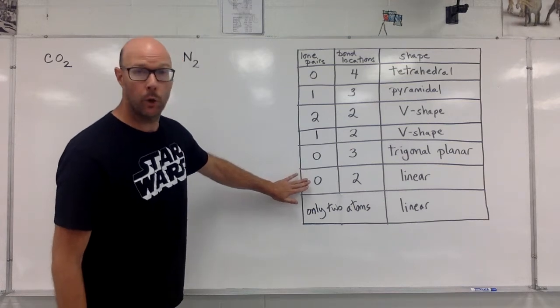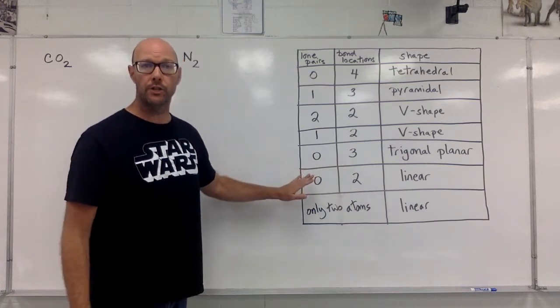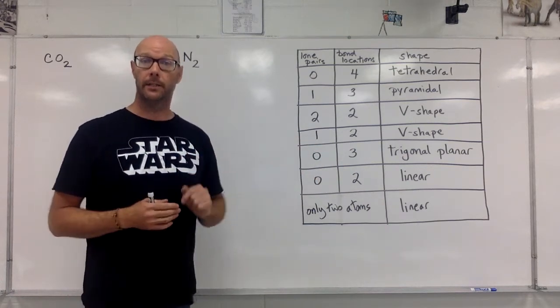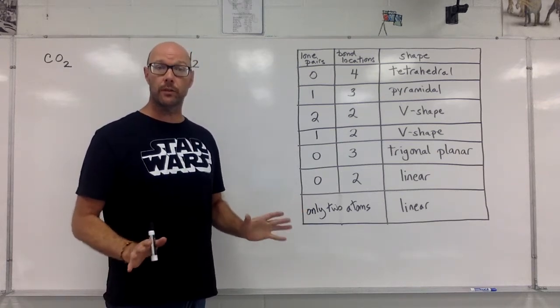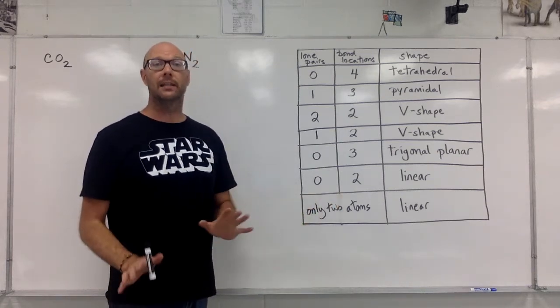If there's zero lone pairs and two bond locations, it's going to be all in a line, linear. Or there's only two atoms. If there is not a central atom, that's also going to give us a linear shape.